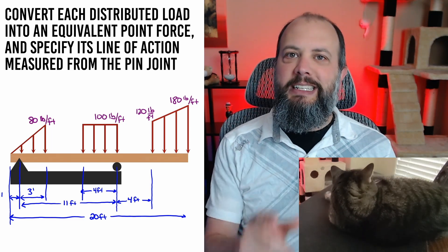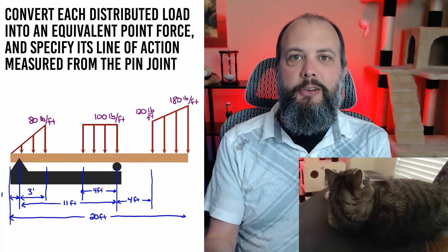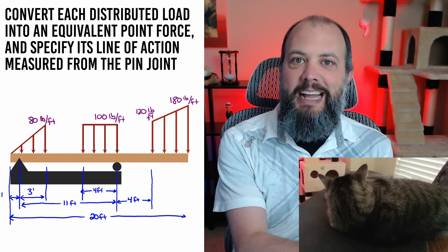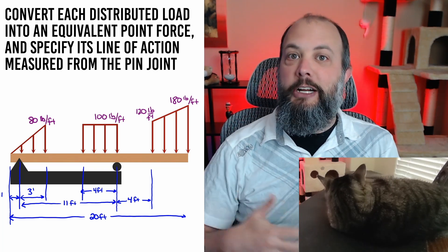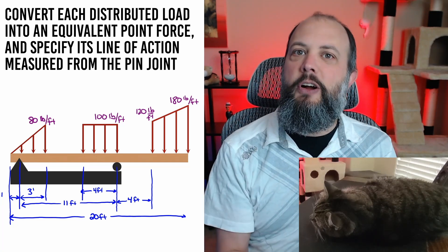The most common distributions you're going to see in your statics class are going to be this uniform distribution, a rectangle, a triangular distribution that starts at zero on one side and gets larger towards the other, and a trapezoidal distribution that's sloped like a triangle, but doesn't start from zero. All right, so let's solve this example problem and replace all three of these distributed loads with their equivalent point forces.